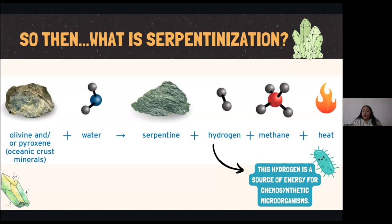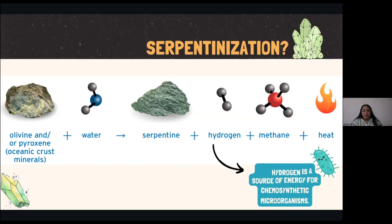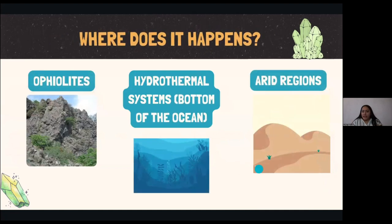During this process, other products are generated like hydrogen, methane, and heat. This hydrogen is very important because it's a source of energy essential for chemosynthetic organisms to thrive in these extreme environments. Serpentinization happens mainly in ophiolites like the Coast Range ophiolite, in hydrothermal systems like the bottom of the ocean, and in arid regions — generally, places that have a lot of heat or a lot of pressure.